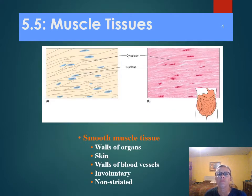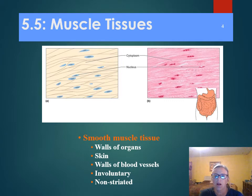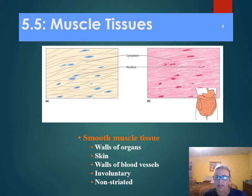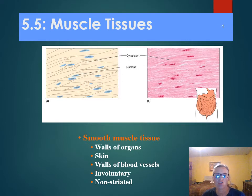Smooth muscle cells are found in the wall of the stomach and intestine, and we don't have conscious control of these. The body controls these through the nervous system. We have things that cause what we call peristalsis — peristalsis moves food through the gastrointestinal system, and so they contract on their own. It's called smooth muscle because it does not have the same striations; the lines are not nearly as distinct as the lines we saw in skeletal muscle.